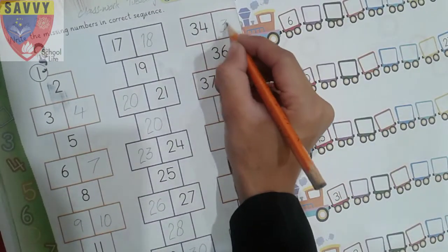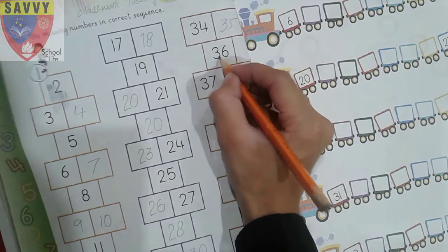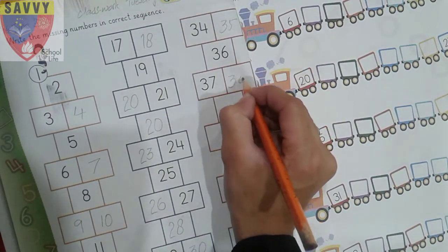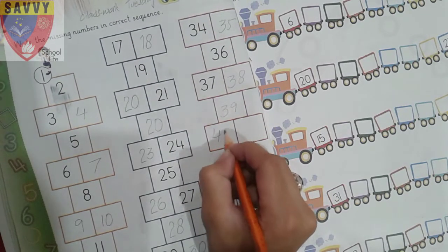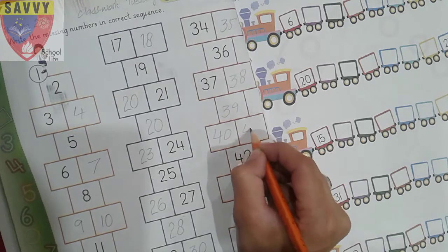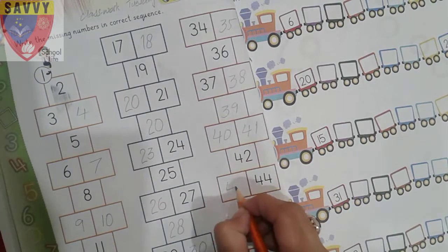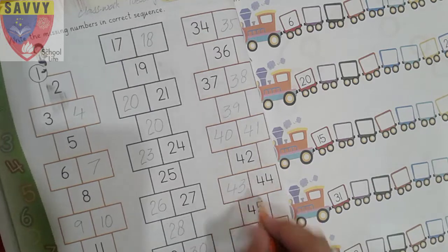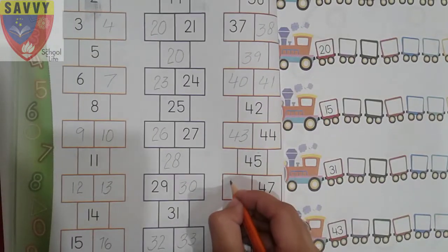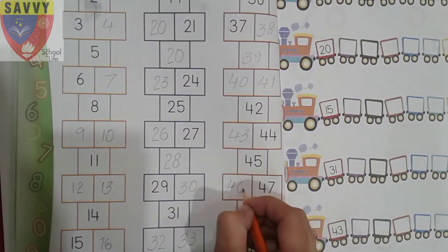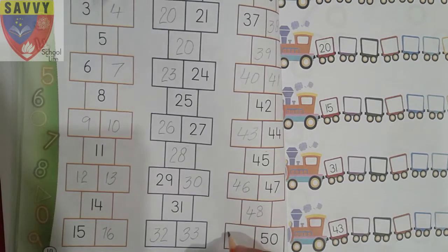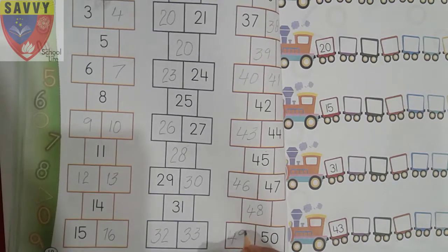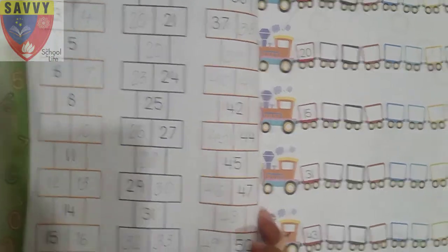Thirty, thirty, thirty-one, thirty-two, thirty-three, thirty-two, thirty-four, thirty-five, thirty-six, thirty-seven, thirty-eight, thirty-nine, forty, forty-one, forty-two, forty-three, forty-four, forty-five, forty-six, forty-seven, forty-eight, forty-nine, fifty. Very good.